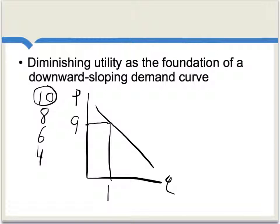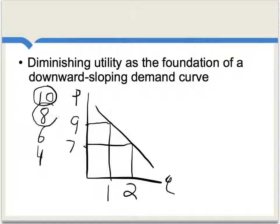But if, for instance, the price is 7, we find that same individual will buy 2 units of the good, because the second unit is worth 8, and that's worth more than the 7, and so on — and there you get the downward-sloping demand curve.